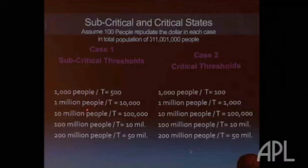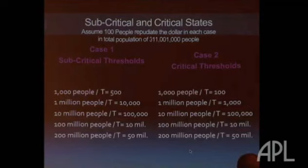So T is a threshold. T is a level where that's my threshold. When I see somebody act in a quantity greater than T, I act.